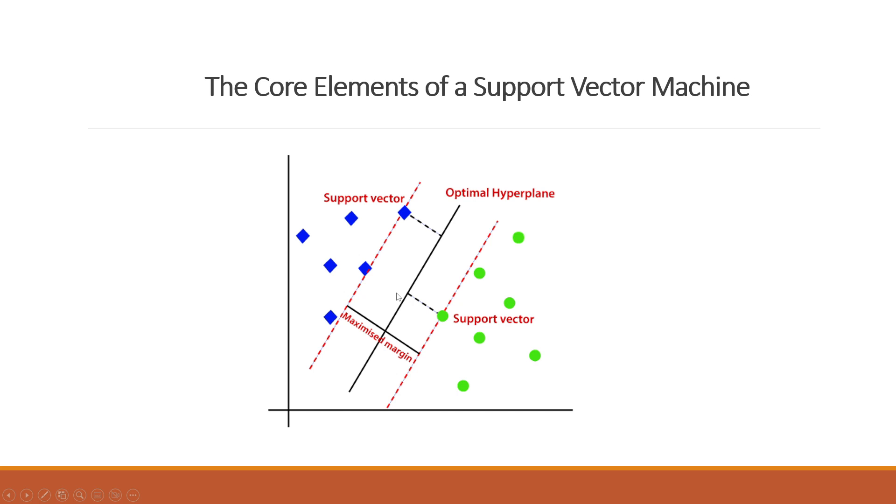So this is the very high level idea of support vector machine. Finding the optimal hyperplane that separates two classes with maximum margin, and then these are support vectors.